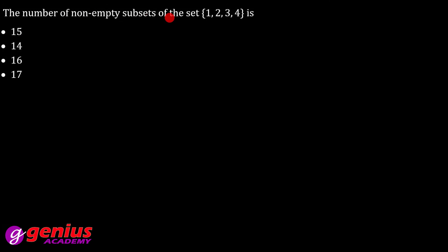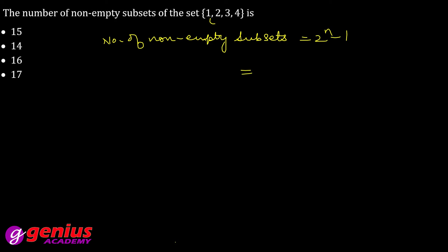The number of non-empty subsets of the set: the formula is 2ⁿ − 1. Here n is 4, so it becomes 2⁴ − 1 = 16 − 1 = 15. Final answer is 15.